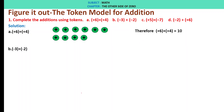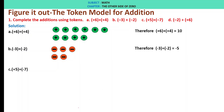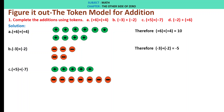Minus 3 plus minus 2. First we have minus 3 tokens, then 2 more minus tokens are added. Therefore, minus 3 plus minus 2 is minus 5. Plus 5 and plus minus 7: we have plus 5 and then minus 7. We cancel out the plus and minus pairs, and we are left with minus 2. Therefore, plus 5 plus minus 7 is minus 2.